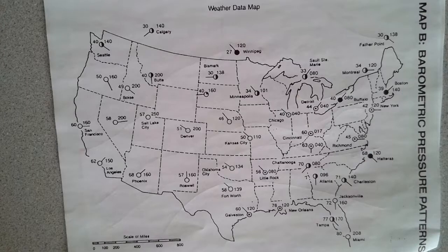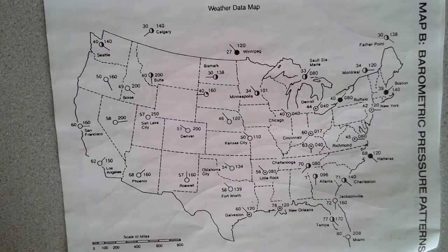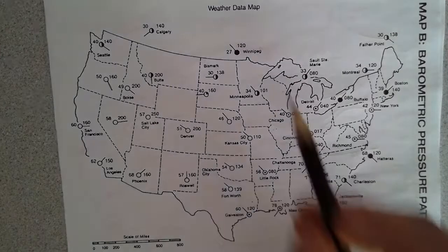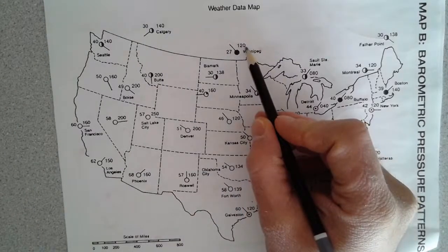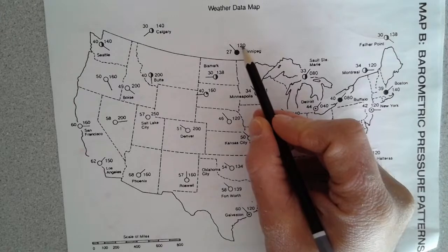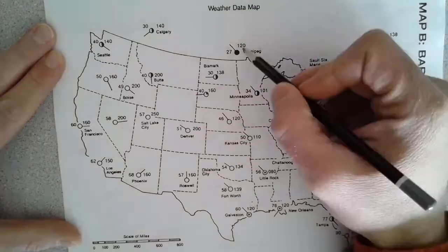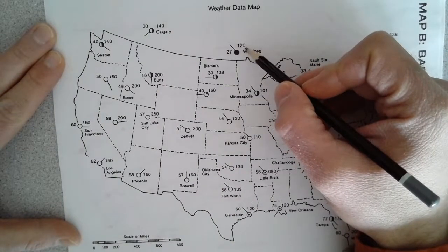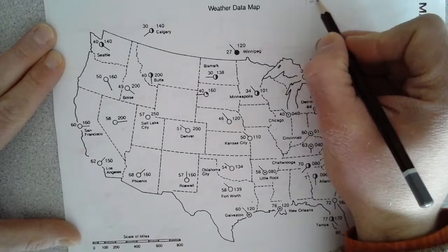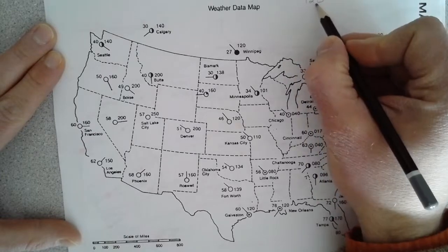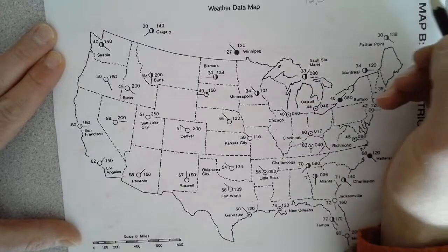Just to remember, this is the shorthand form. So for example, if I'm taking a look at Winnipeg right here, Winnipeg says that I have 120. 120 is actually shorthand, so I would have to convert that back into millibars. To do so, I would write that number, which is 120, put a decimal place before the last digit, and then put a 10 in front of it. So my actual reading is 1,012 millibars.